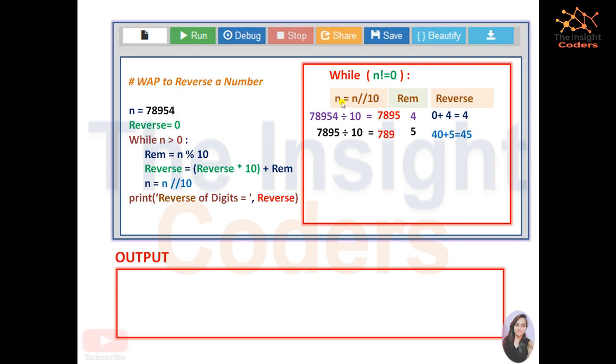We have discussed in each and every video. So what we used to do, the n becomes this quotient because we have assigned the value of n divided by 10 to the variable n itself. So the value is 7895.